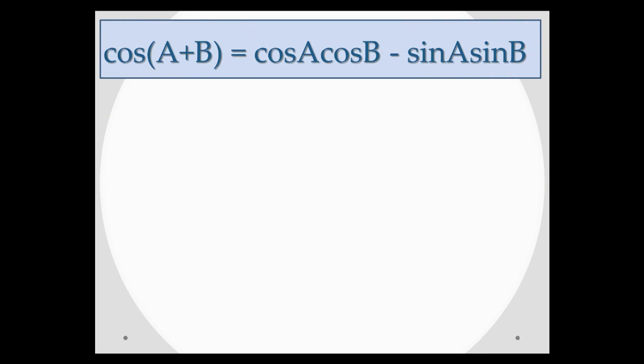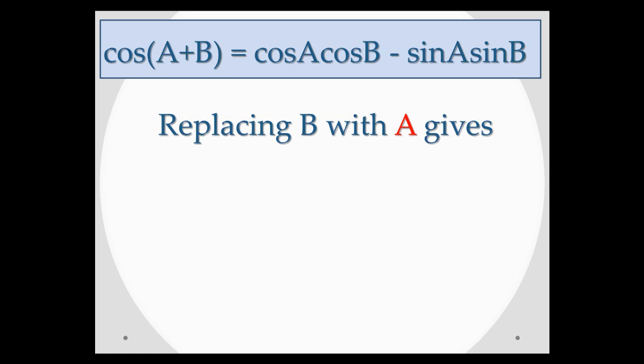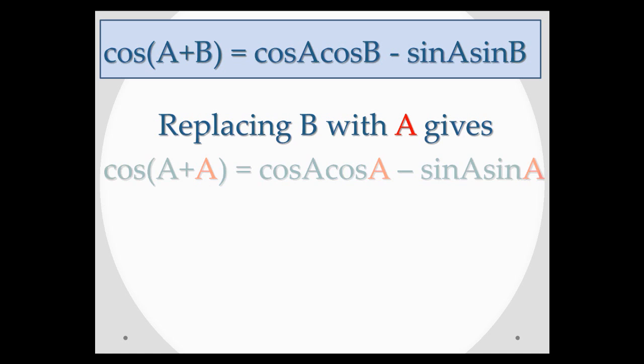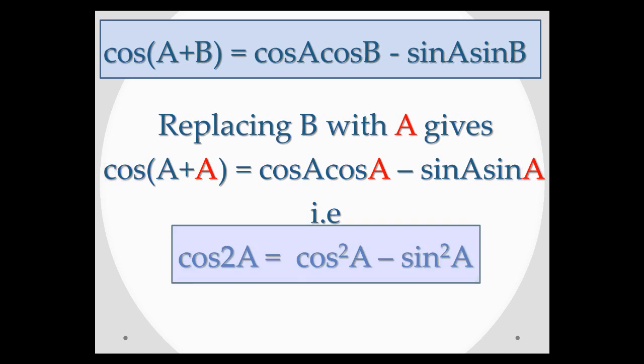If we use the formula for cos(a + b) as our starting point and replace b with a, we end up with a formula for cos 2a. We find that cos 2a is just cos squared a minus sine squared a.